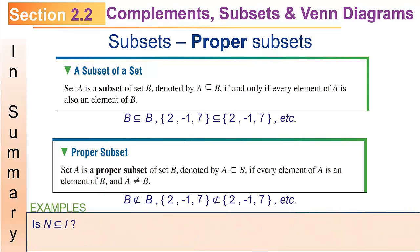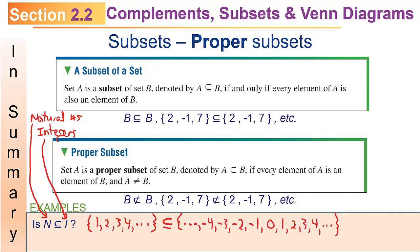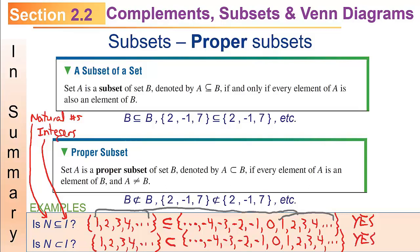Is N a subset of I? Capital N is the natural numbers; capital I is the set of integers, which includes the counting numbers plus zero and the negatives. Everything on the left has a counterpart on the right, so yes, the natural numbers are a subset of the integers. Is N a proper subset of I? Yes, because there is no equality — there are elements of the integers that are not natural numbers — so the natural numbers are a proper subset of the integers.